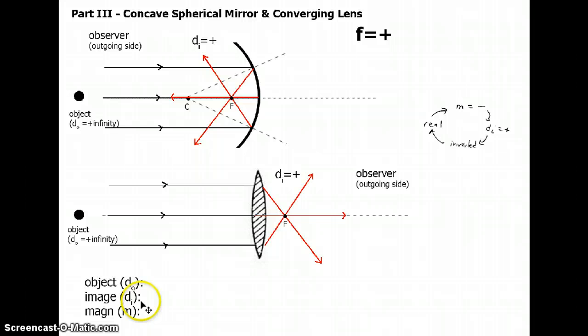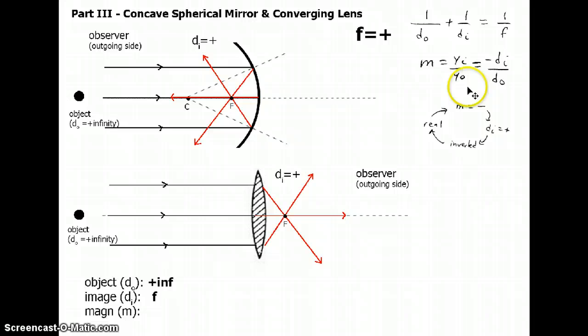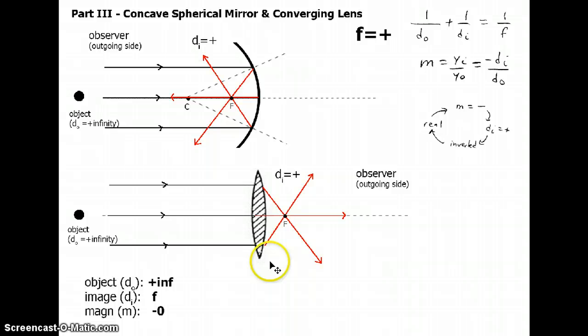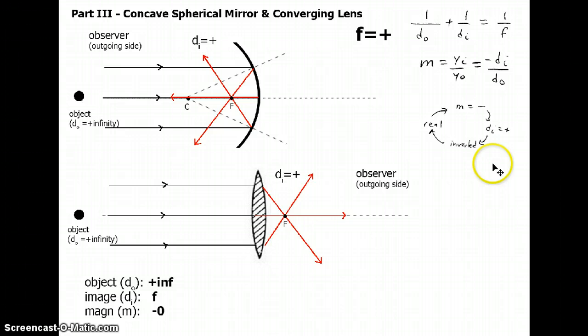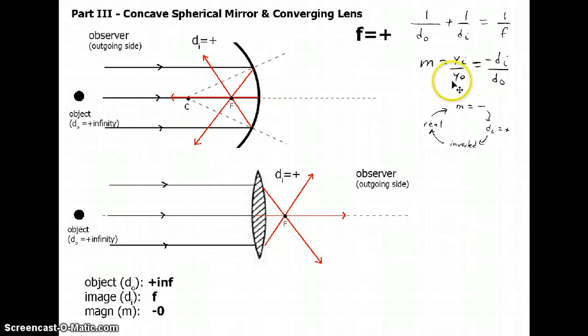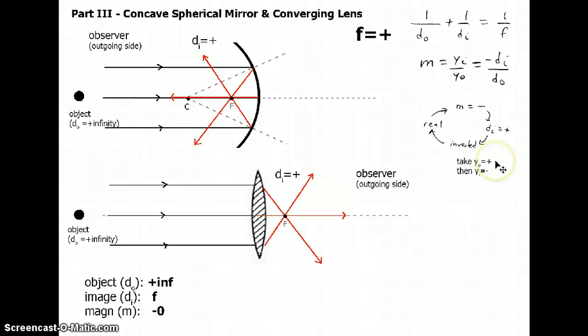Let's start a chart to catalog the results. Here are our master equations, and you would find they agree. If you plug in DO equals infinity, you get DI equals F, and the magnification is zero — there's no way a mirror or lens can capture a finite-sized image of an object infinitely far away. I'll label it somewhat silly-looking as minus zero: if the image weren't infinitely small, it would be upside down. We also have sign conventions for object and image heights — the object height is taken as positive, and if the image is flipped upside down, the image height is negative.